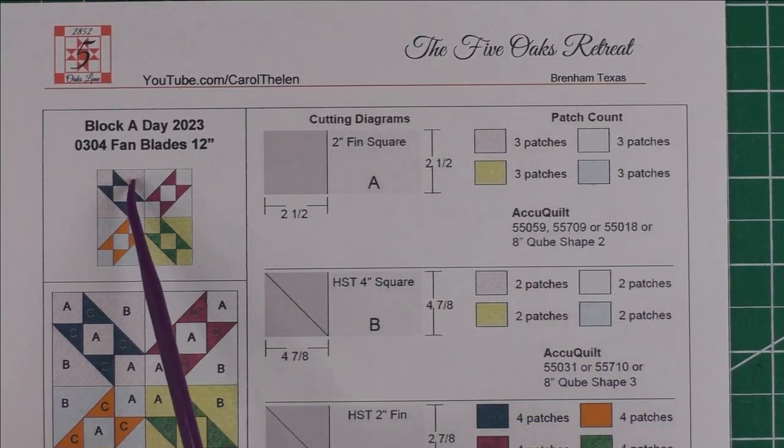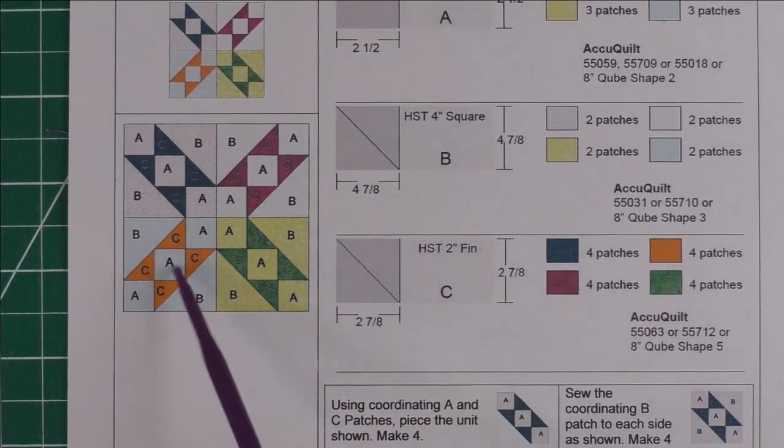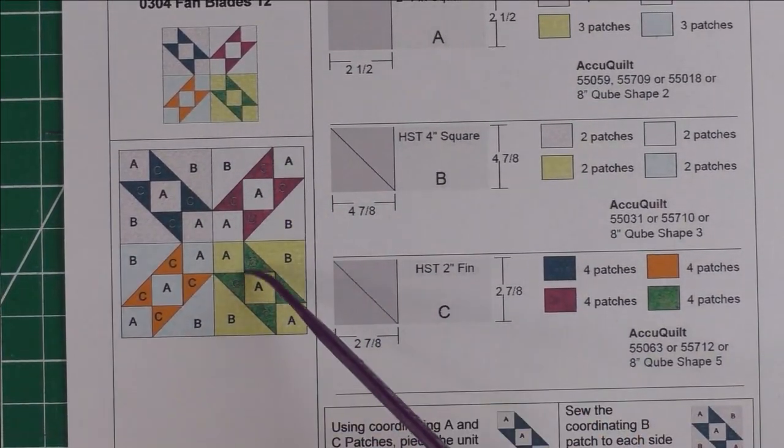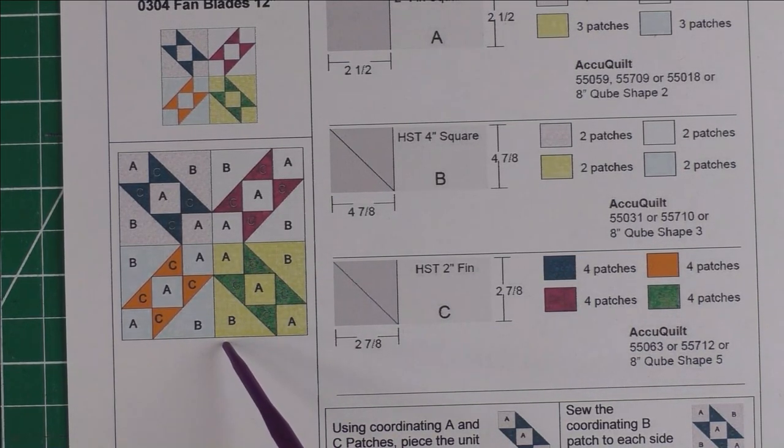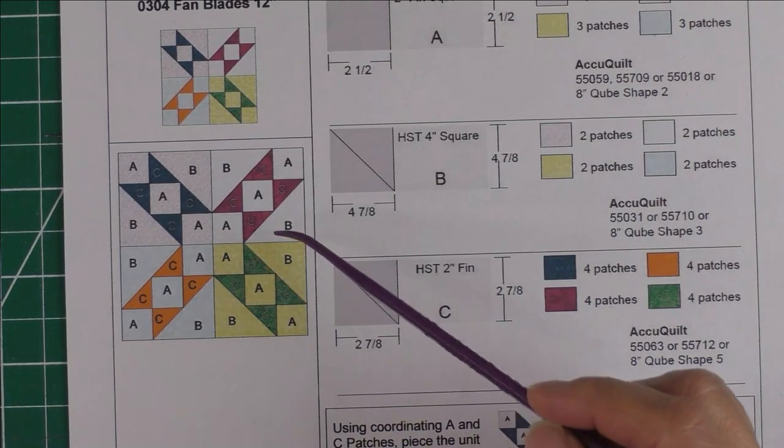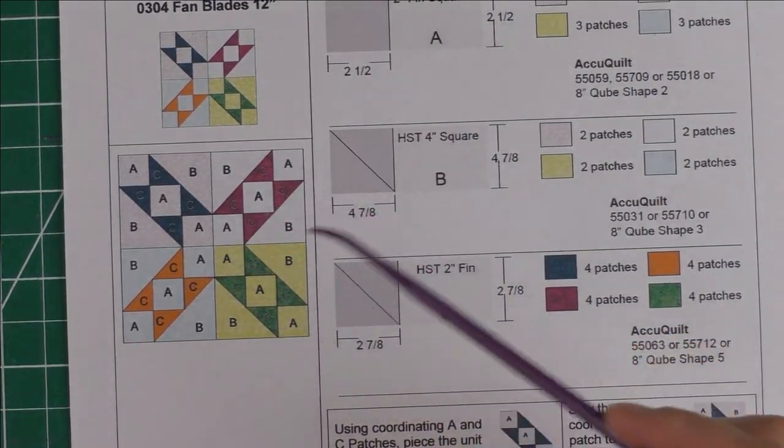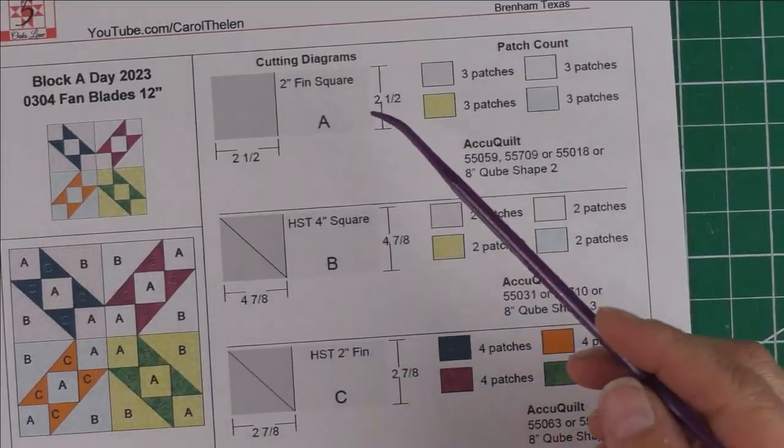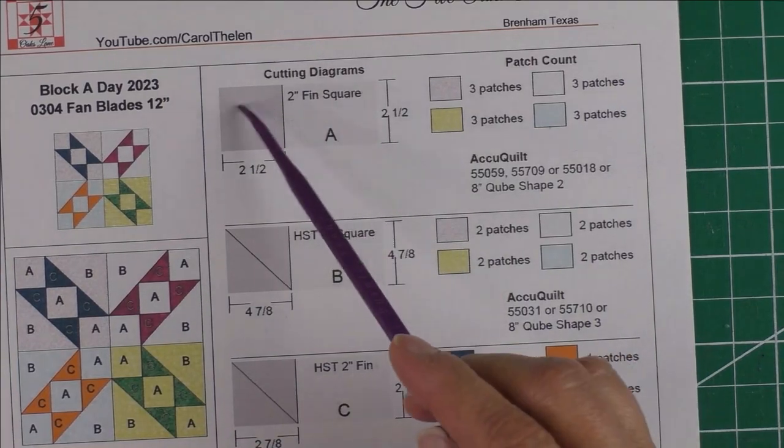This block is called Fan Blades and it's a 12-inch block. Here is the diagram. This block looks really good if you have good contrast between your lights and darks. Here I've done light backgrounds with dark accents in the blades. Here are the cutting instructions. Patch A is a 2-inch finished square; you're going to cut 2½-inch squares.